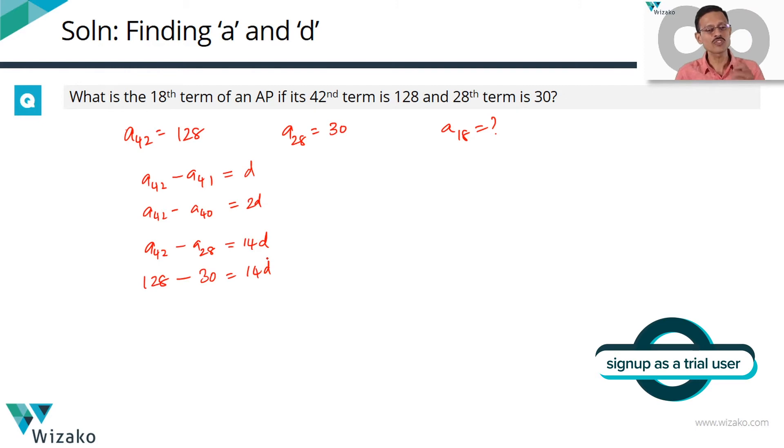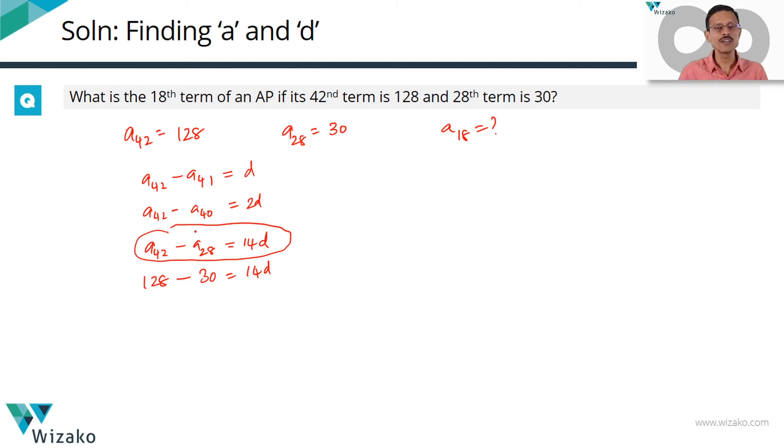The crux of this alternative method is basically not writing this in the traditional formula A1 plus 41d, A1 plus 27d. It basically distills those two steps into one single step. We are computing how many common differences will exist between any two given terms of an arithmetic sequence.